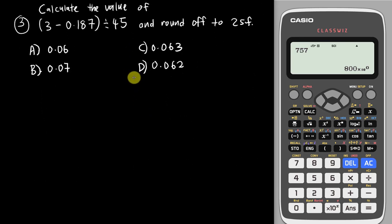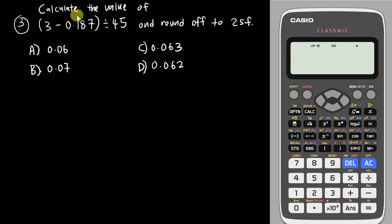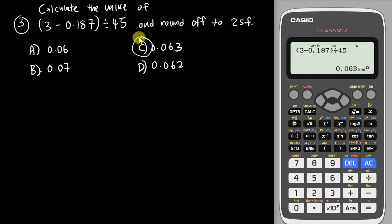One last example before ending: calculate (3 − 0.187) ÷ 45, rounded to 2 Significant Figures. First set the calculator to 2 Significant Figures via Number Format, SCI, 2. Then type exactly: open bracket, 3 minus 0.187, close bracket, divide by 45, and press Enter. The result is in standard form with a negative power, so press Shift ENG once. The answer is 0.063. This type of question appears 1 to 2 times in SPM Paper 1.